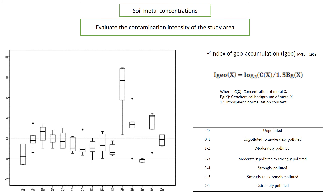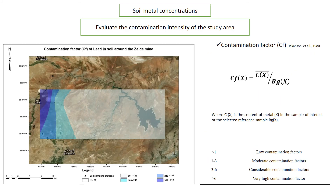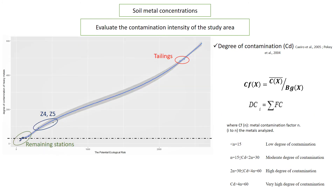The contamination factor is used to describe the contamination of a given toxic substance. According to the distribution map of the contamination factor, it can be noticed that the study area is characterized by values higher than the limit value of this factor. We can also notice that the residue and soils in the vicinity present the highest values, and then this value decreases downstream. The degree of contamination is defined as the sum of all contamination factors.